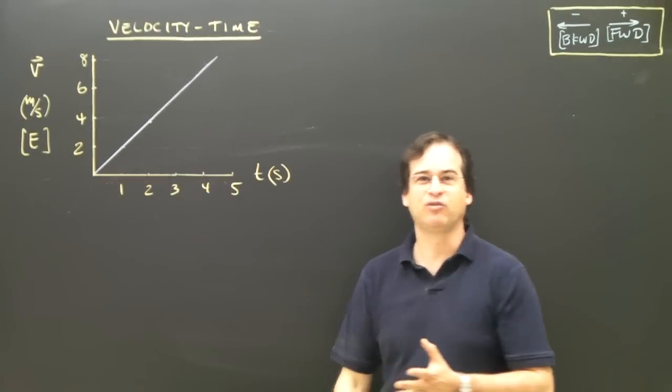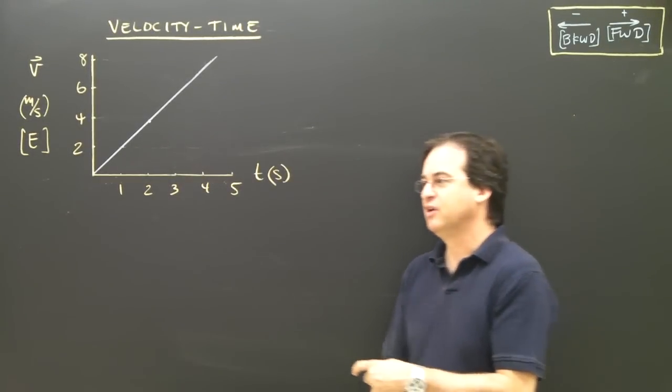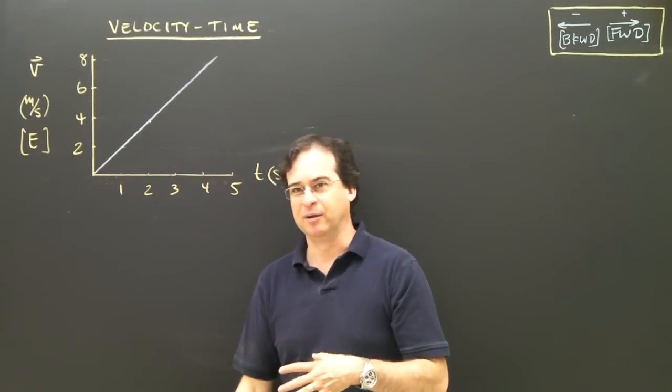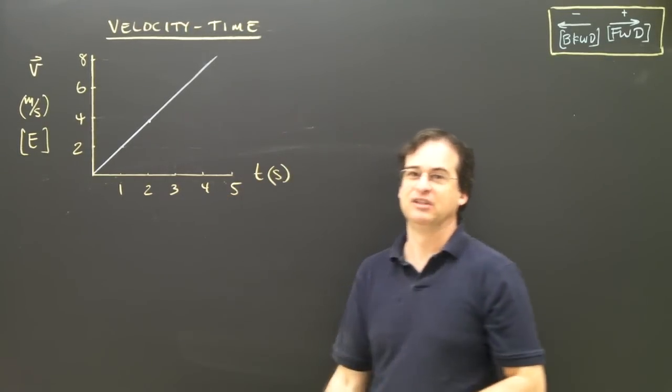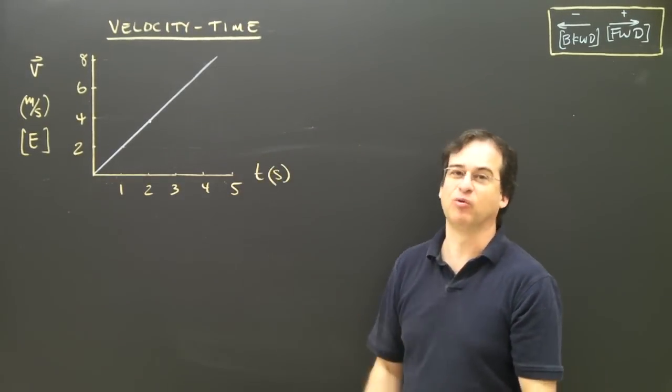Okay, so you've drawn DT graphs, you've found the slope of DT graphs. You've probably made a velocity time chart, and then you draw a velocity time graph. Now we want to look at this graph and figure out what it's doing.